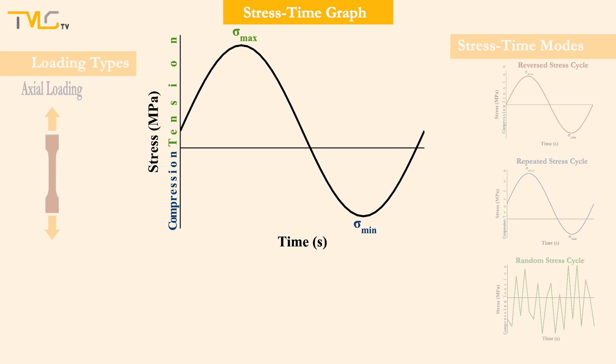The maximum stress shown on the stress time graph is denoted as sigma max, and minimum as sigma min, and both are reported in MPa. Using these max and min stress values, mean stress, range of stress, stress amplitude, and stress ratio can be determined easily.